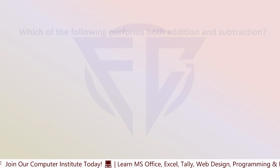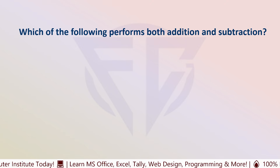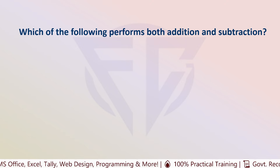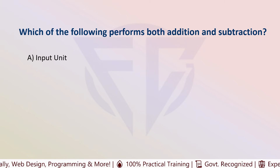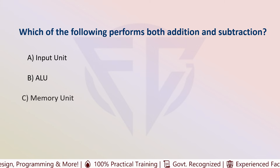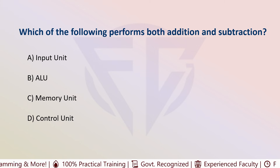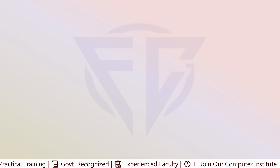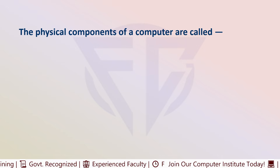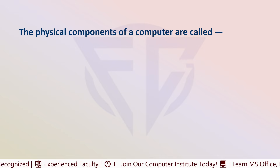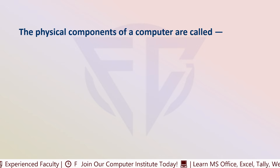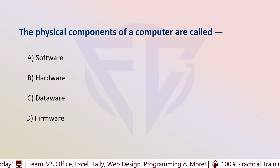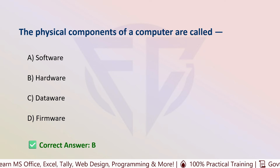The next question is: which of the following performs both addition and subtraction? Options are: A) Input unit, B) ALU, C) Memory unit, and D) Control unit. The correct answer is B, that is ALU. The next question: the physical components of a computer are called — options are: A) Hardware, B) Dataware, and C) Firmware. The correct answer is A, that is hardware.